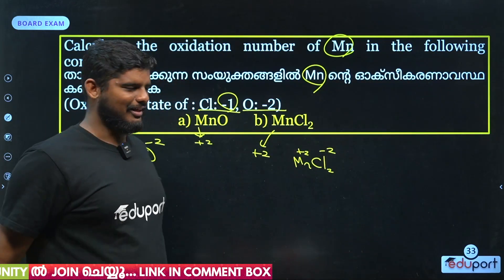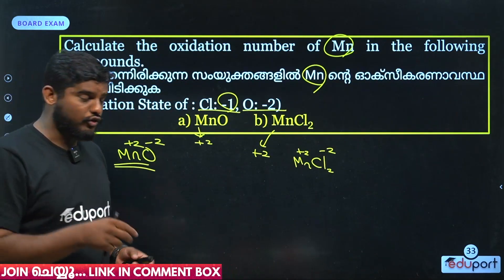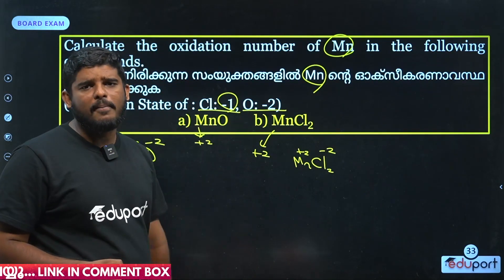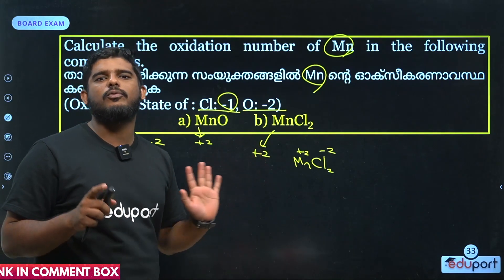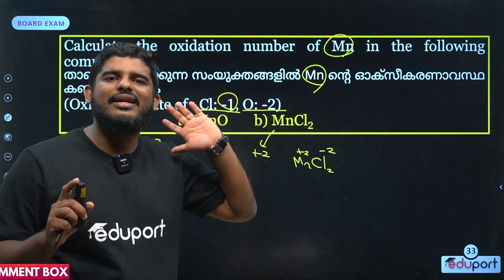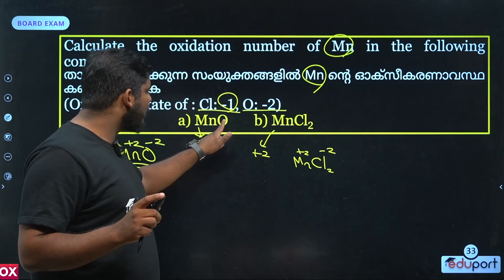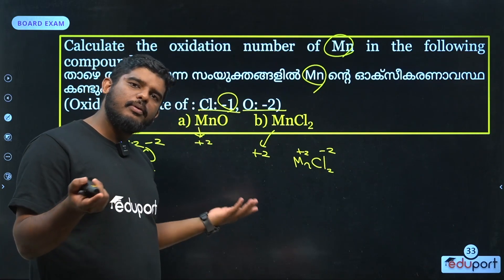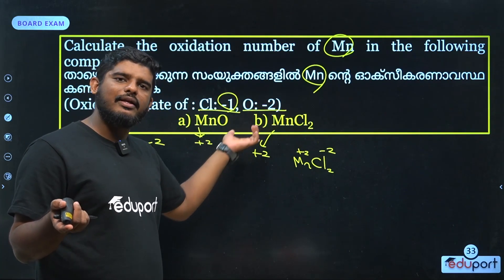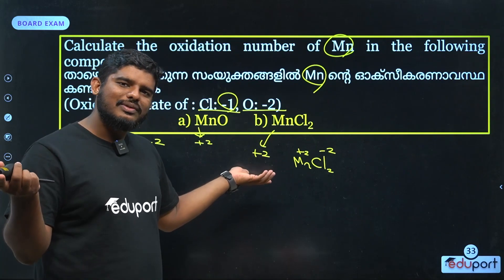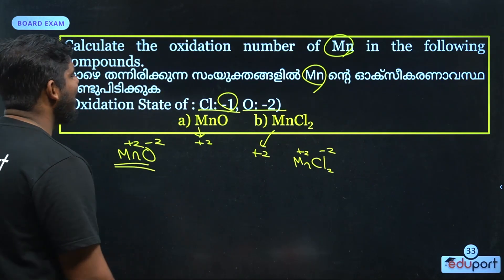Yes. So why are you doing it? If you put the oxidation number of the compounds, how much is it? Now, if you want to oxidize the chlorine — then oxygen minus 2, manganese plus 2, chlorine minus 1, dendron minus 2 — then manganese plus 2. So that's it. Yes, that's it.